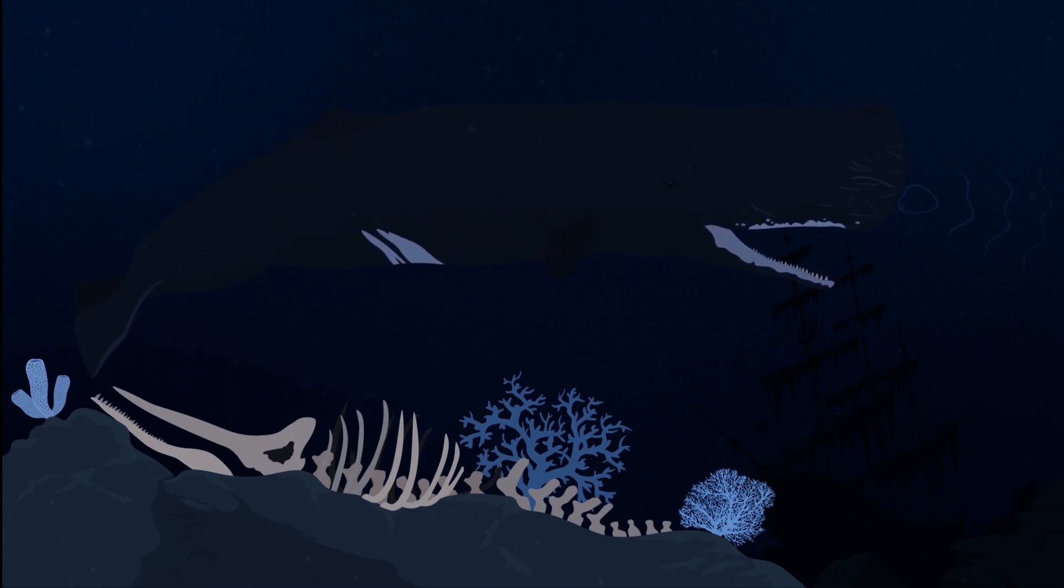Sperm whales also produce a series of clicks called codas. Each whale has their own distinctive coda, and scientists believe that this is how sperm whales recognize one another.